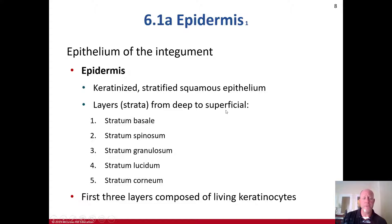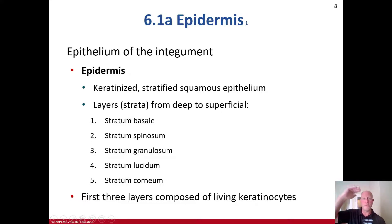The layers of the strata from deep to superficial are: basal, spinosum, granulosum, lucidum, and corneum — all stratum. A mnemonic to help remember them starting from the outer layer going deeper is 'Come, let's get sunburned' — corneum, lucidum, granulosum, spinosum, basal. The first three layers — basale, spinosum, and granulosum — are composed of living keratinocytes, while lucidum and corneum are composed of dead keratinocytes.